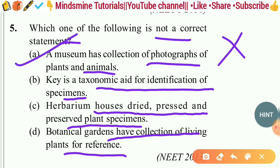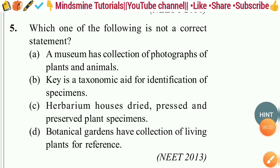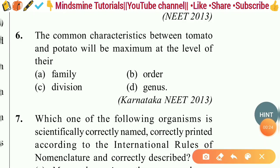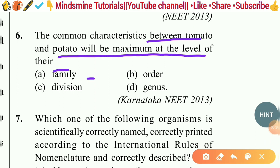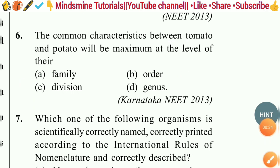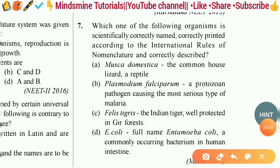Question six: The common characteristics between tomato and potato will be maximum at the level of their — family, division, order, or genus. The right answer is family, because at the family level the maximum common characteristics are found between the two plants.